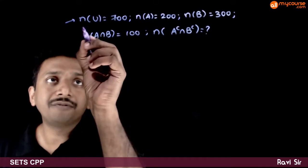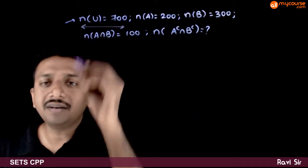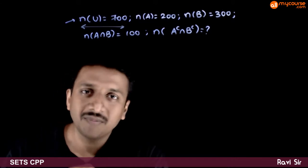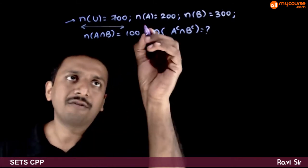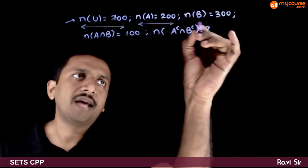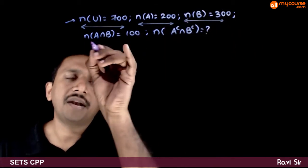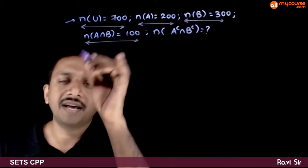In this question you are given n of U equals 700. There are a total of 700 elements in the universe itself. N of A is 200, n of B is 300, n of A intersection B is 100.